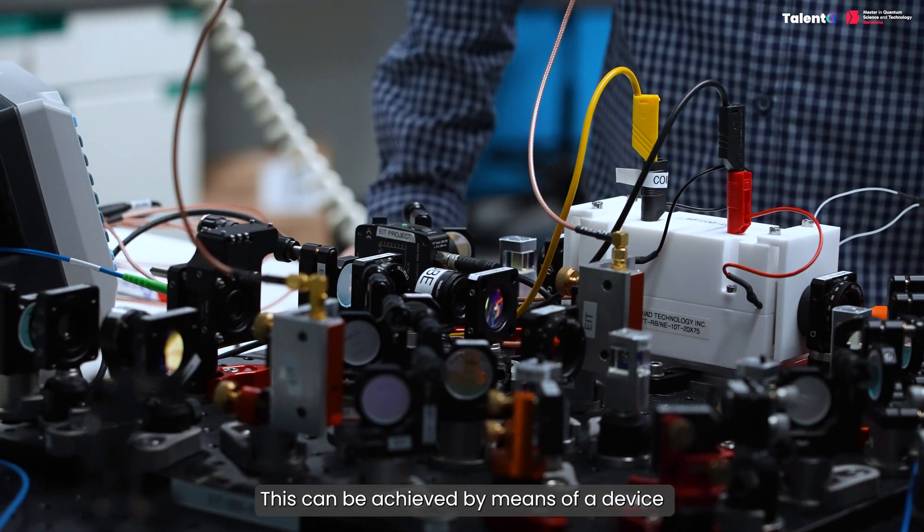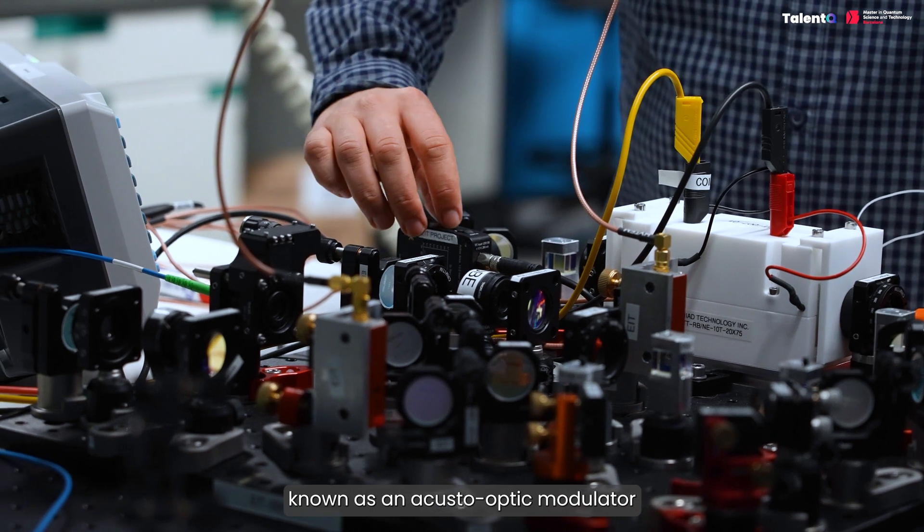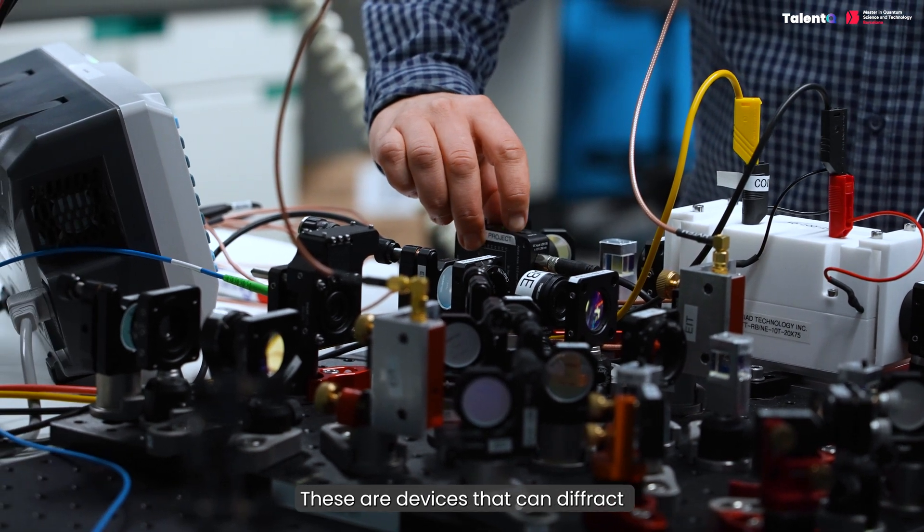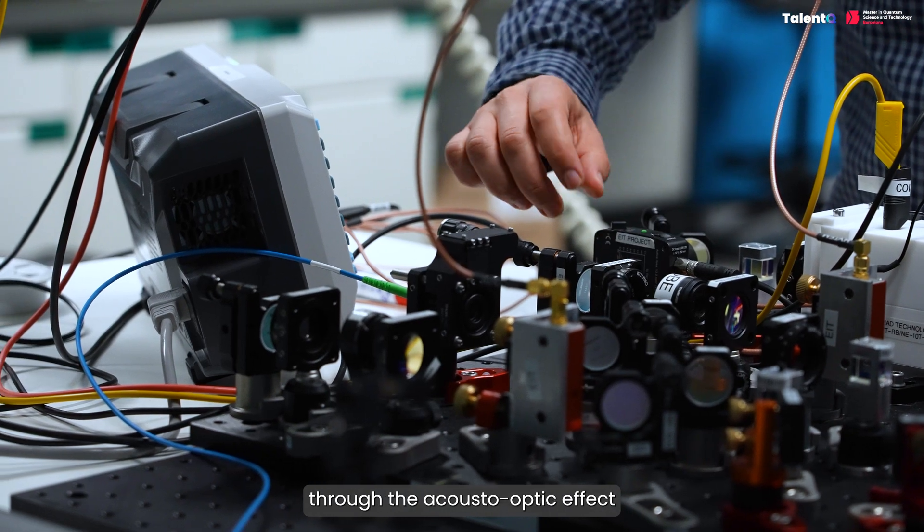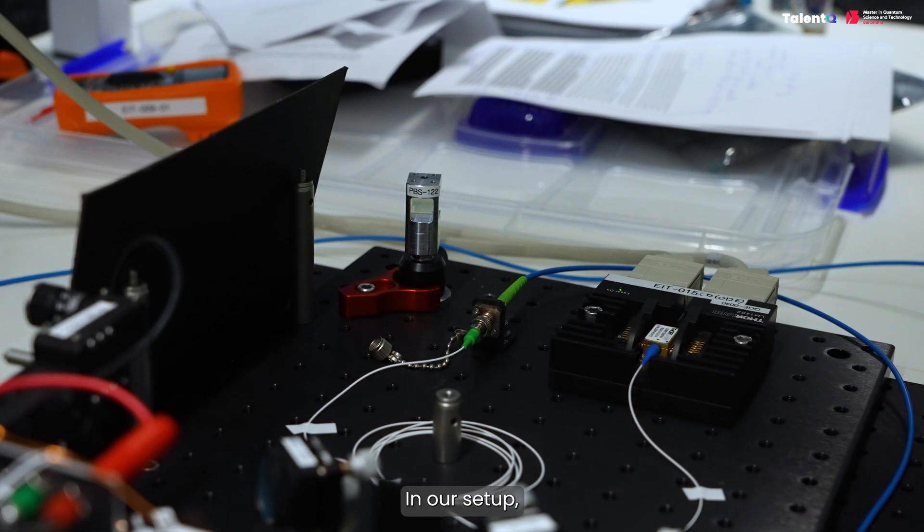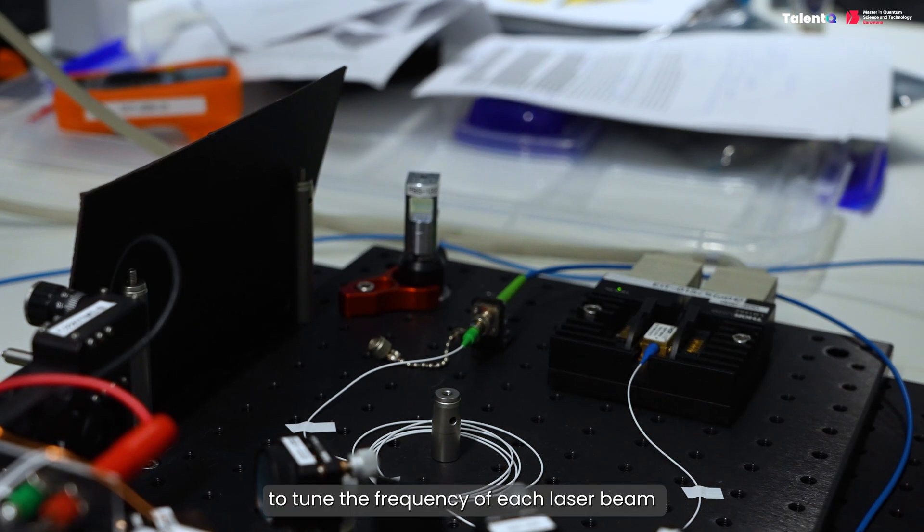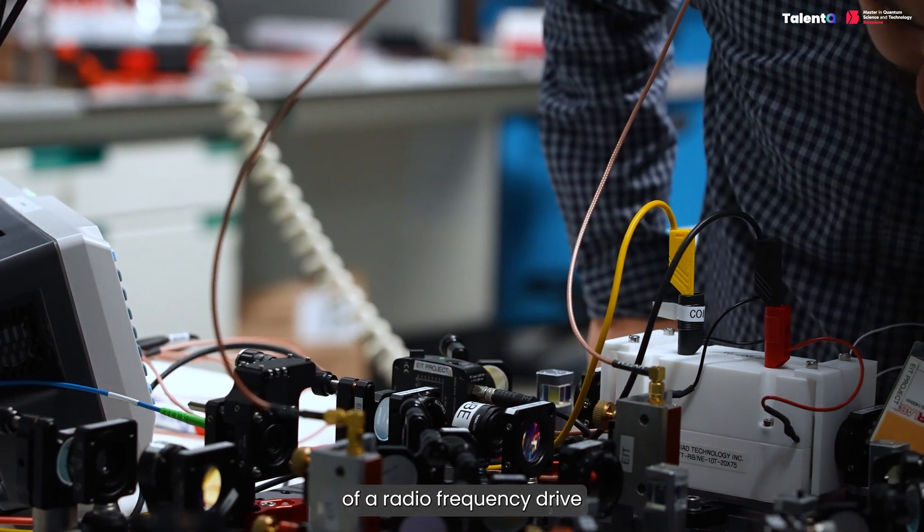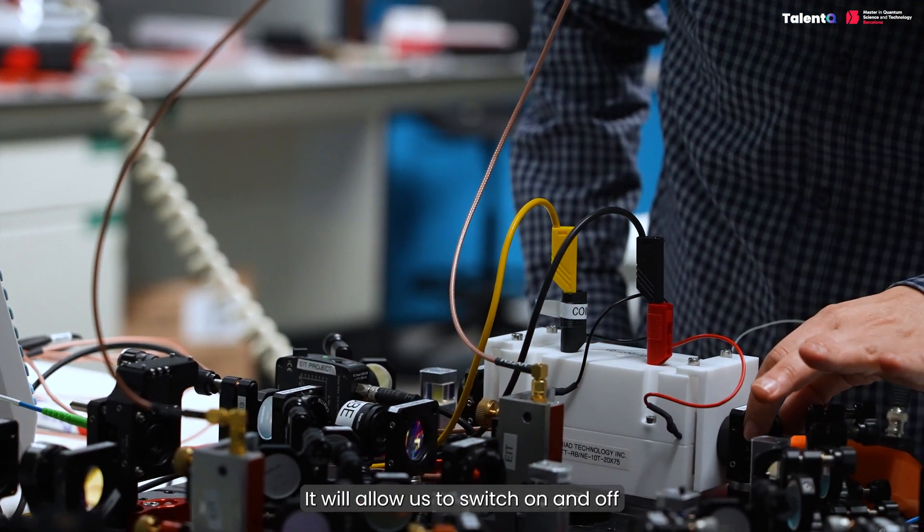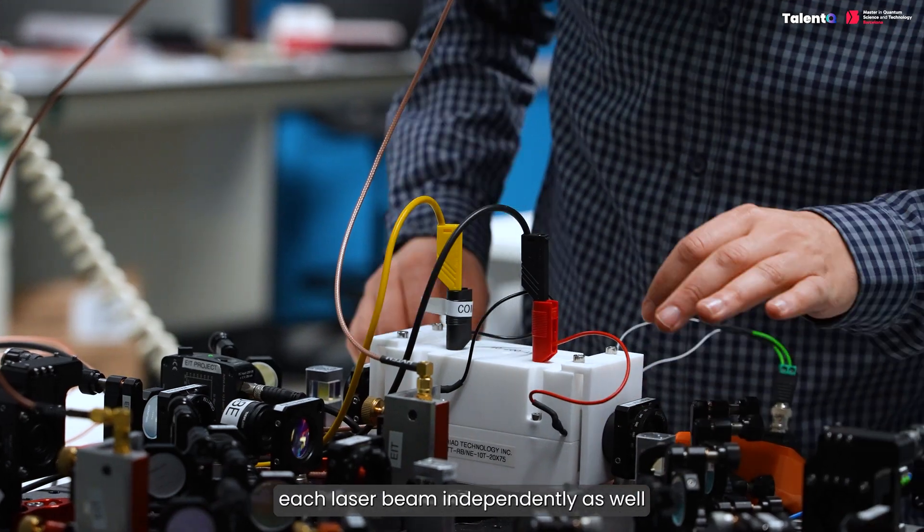This can be achieved by means of a device known as an Acousto-Optic Modulator. These are devices that can diffract and shift the frequency of light through the Acousto-Optic effect. In our setup, we use two of these devices to tune the frequency of each laser beam by changing the frequency of a radio frequency drive. It will allow us to switch on and off each laser beam independently as well.